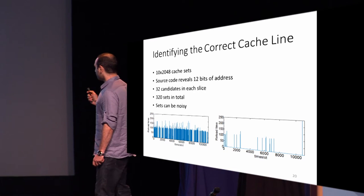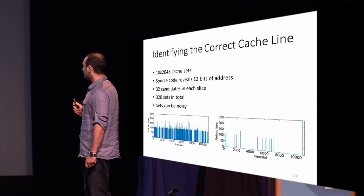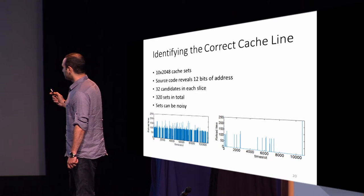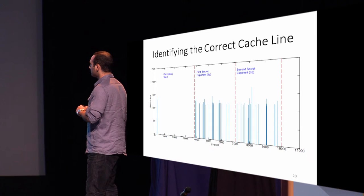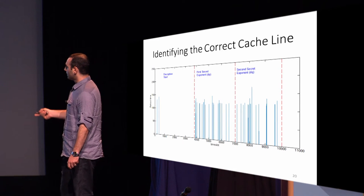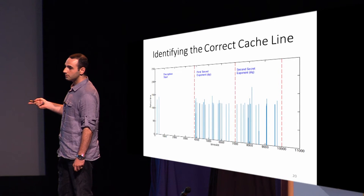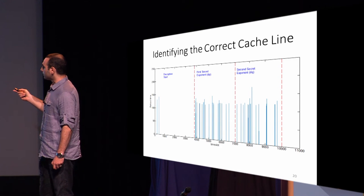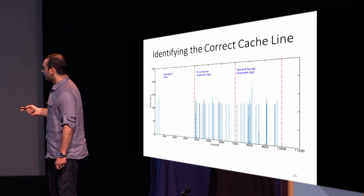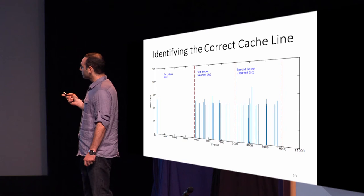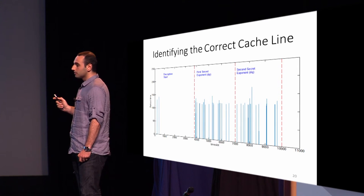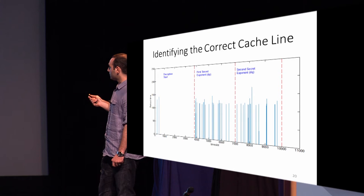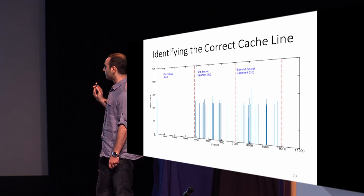Here is another example with a much less noisy cache set — though some vertical lines remain, it is far better than the previous one. In our experiments we observed this: before decryption starts, two peaks appear from co-located VMs accessing this set. However, since the multiplication table is not yet in use by RSA, there is not much else. But as soon as the first secret exponent is calculated, we see heavy use of the set — and the same for the second secret exponent. This confirms that the targeted cache set does in fact hold the multiplicand values.